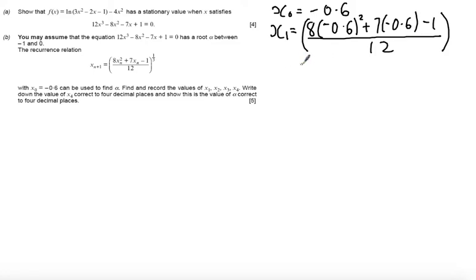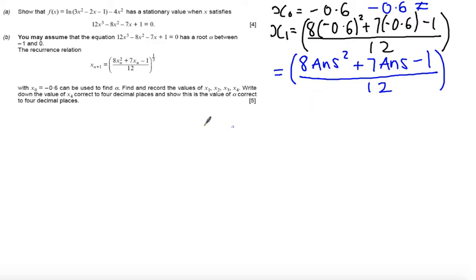Now if you're programming your calculator correctly you can get this to do for you naturally in a loop. So put in minus 0.6 and press answer, and then if you type the following in, first of all you need to do minus 0.6 equals to store minus 0.6 in the answer button. Then to type this in your calculator what you type in is 8 answer squared plus 7 lots of answer minus 1 all over 12, and then you can just press your button repeatedly to generate the values.